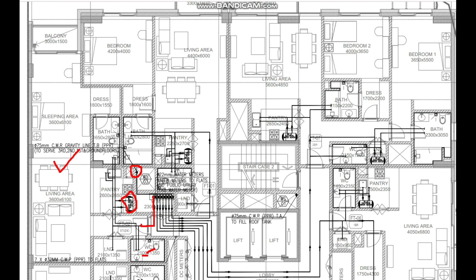The wash basin needs hot water; the water closet does not. We have a washing machine here — no hot water needed. The kitchen sink needs both cold and hot water. There is also a shower area, and further connections will be done later. In total: two wash basins, one shower, and one kitchen sink — these are the fixtures needing hot water.